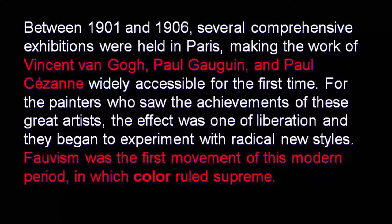Between 1901 and 1906, several comprehensive exhibitions were held in Paris, making the work of Vincent van Gogh, Paul Gauguin, and Paul Cézanne widely accessible for the first time. For the painters who saw the achievements of these great artists, the effect was one of liberation. They began to experiment with radical new styles, which included the exploration of a new role for colour. This is what Fauvism is all about — exploring and experimenting with colour's new role, making it the first movement of the modern period in which colour ruled supreme.